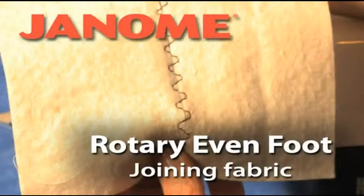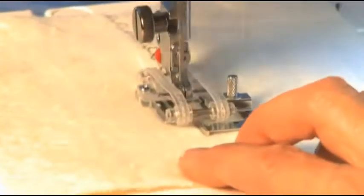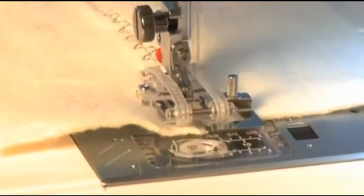Rotary Even Foot: Joining Fabric. You can use the blind hem attachment on the Rotary Even Foot to join pieces of thick fabric, such as batting.